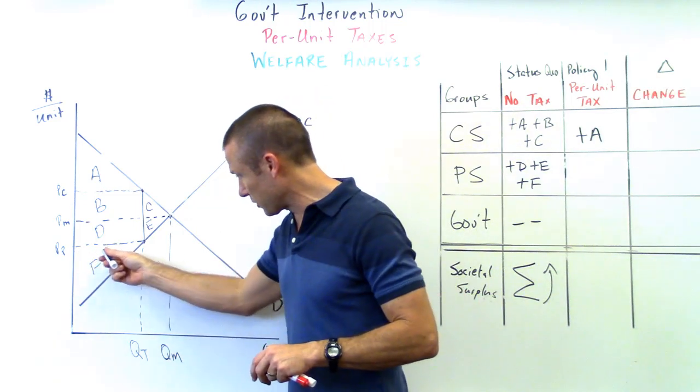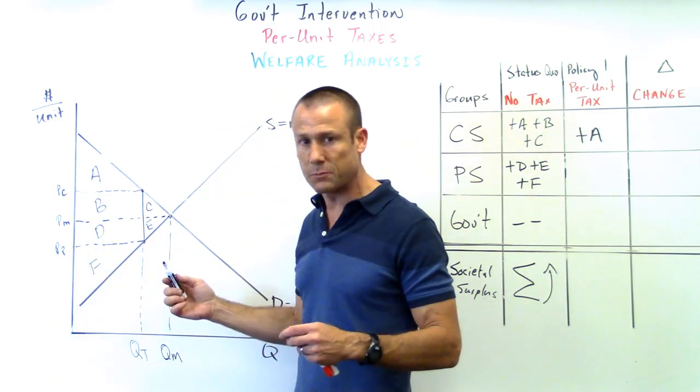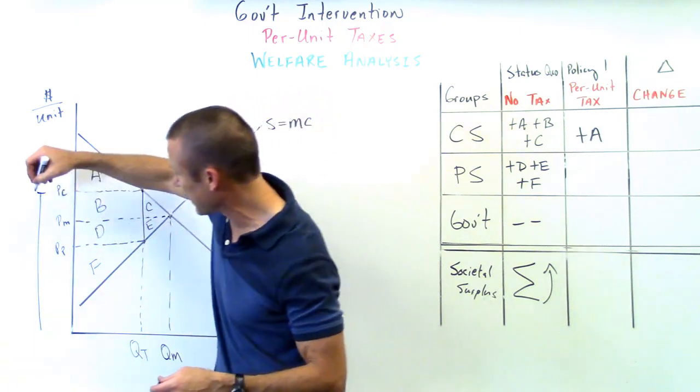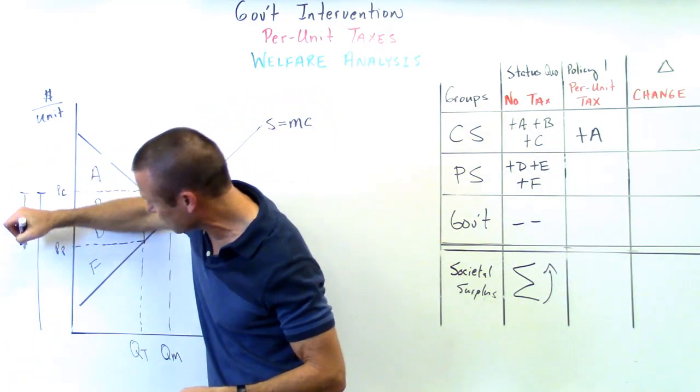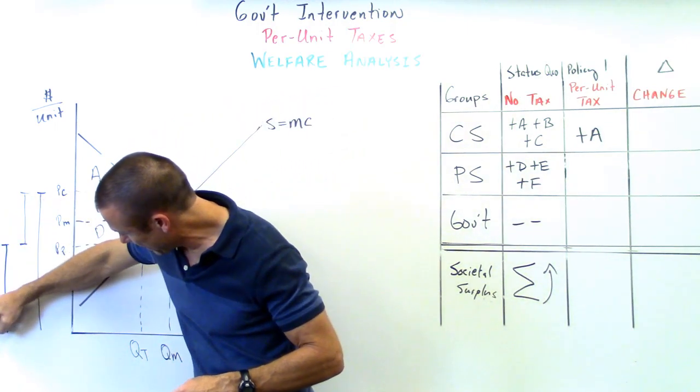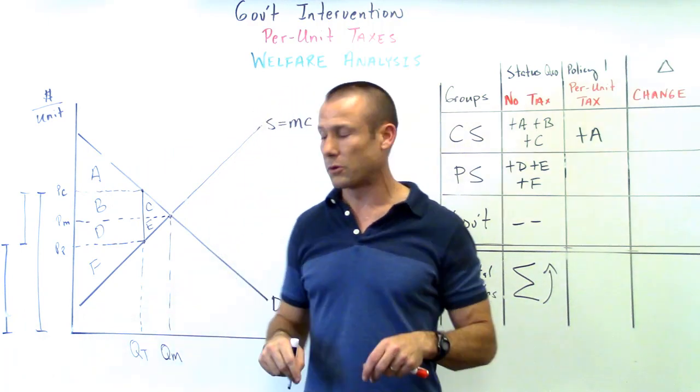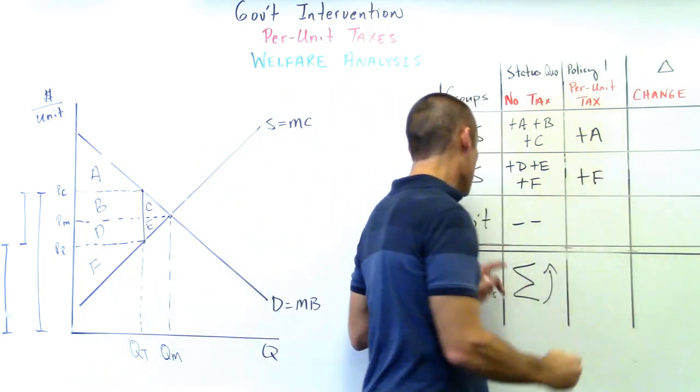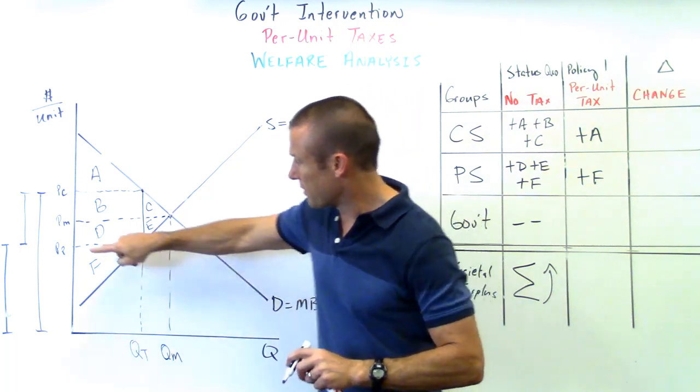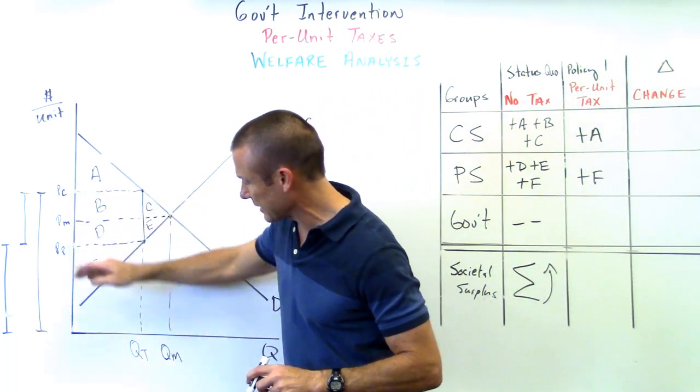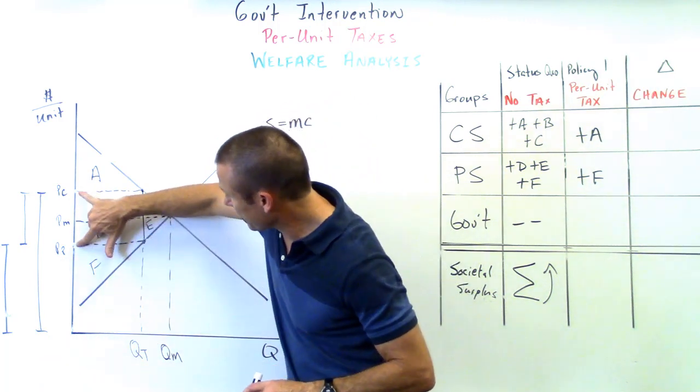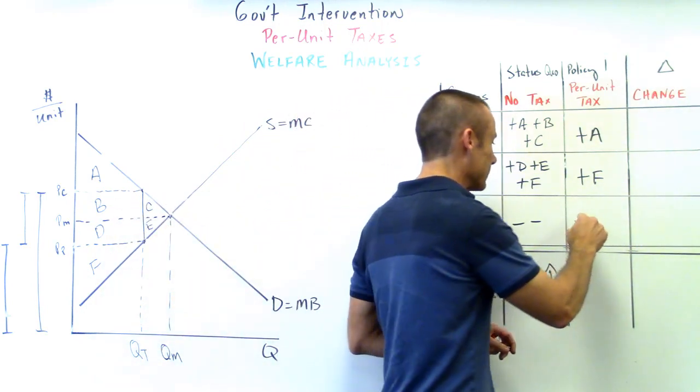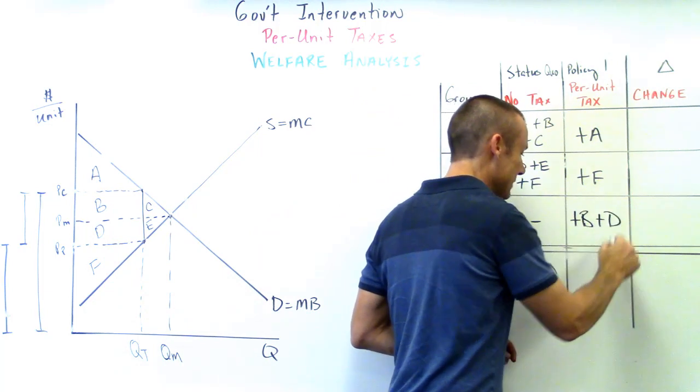The producer, there's their per-unit revenue after they pay the tax. Consumer hands this vertical distance of money to the producer, the producer turns around and pays that vertical distance to the government, leaving the producer with that vertical distance. Per-unit revenue marginal cost f, plus f. But the government they're getting some positives - they're getting tax revenue, this vertical distance per-unit tax, how much is going to get sold all the way to q tax. Leaving the government with plus b and plus d.